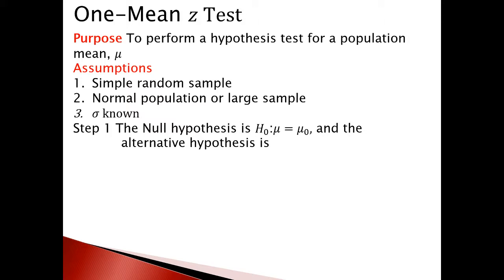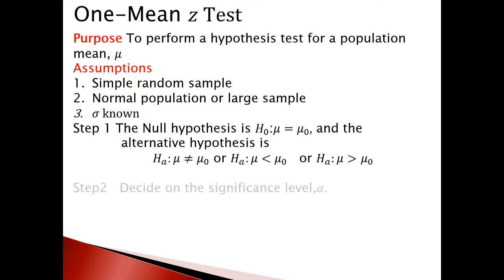Step one: we need to state the null hypothesis and the alternative hypothesis. The null hypothesis is denoted H-naught: mu equals mu-naught, where mu-naught is some specified number. The alternative hypothesis is H-a, and there are three conditions: if mu does not equal mu-naught, this is two-tailed; if mu is less than mu-naught, this is left-tailed; if mu is greater than mu-naught, this is right-tailed.